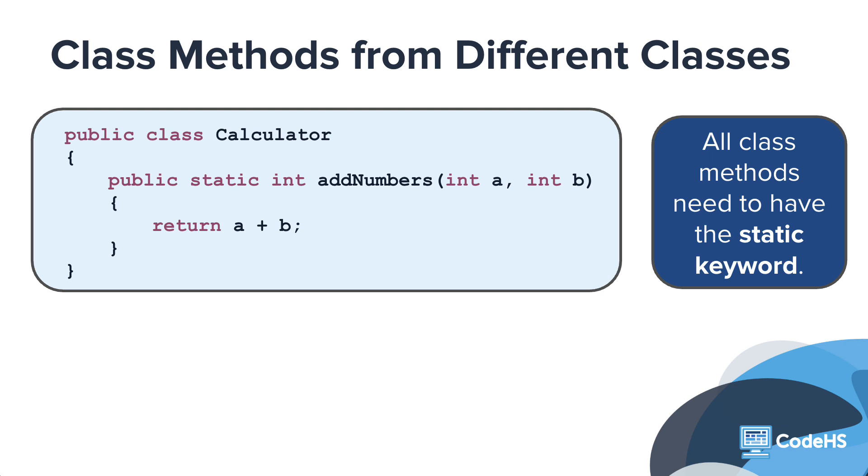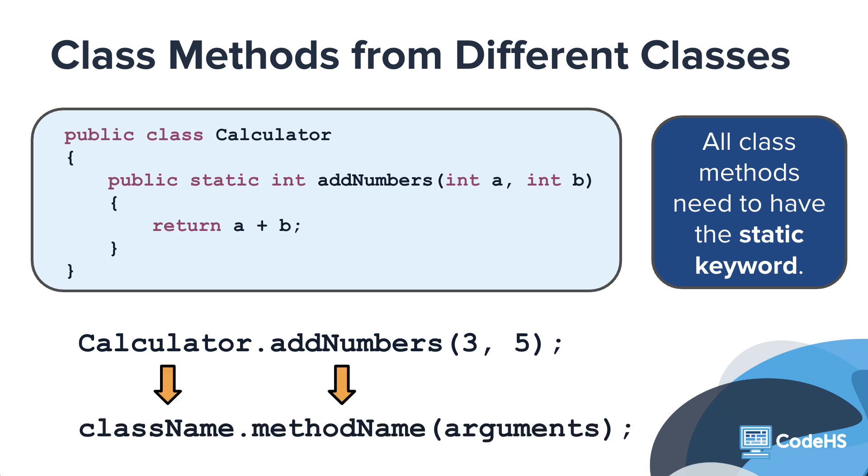In order to call this method from any other class than its own, you would need to type Calculator.AddNumbers with the two arguments, which follows the general pattern for calling class methods of className.MethodName. This tells the program which class the method is defined in, so that it can call it successfully.